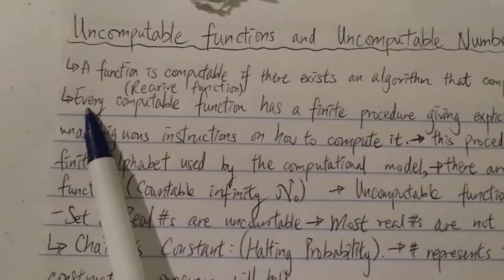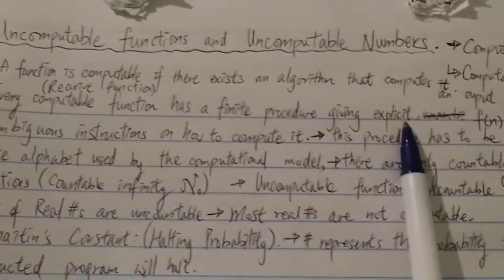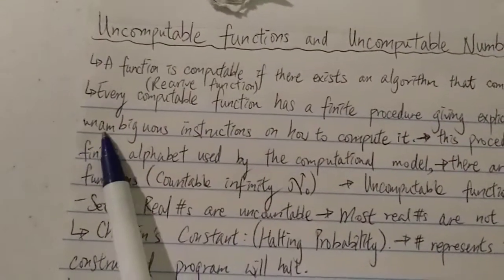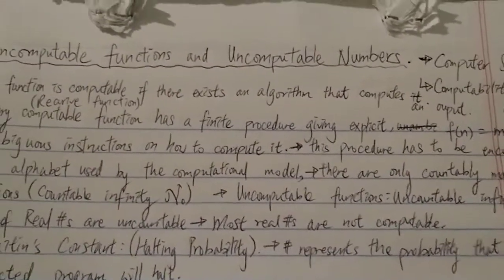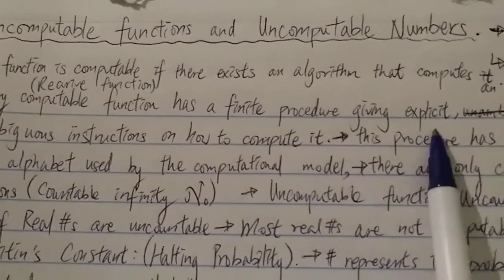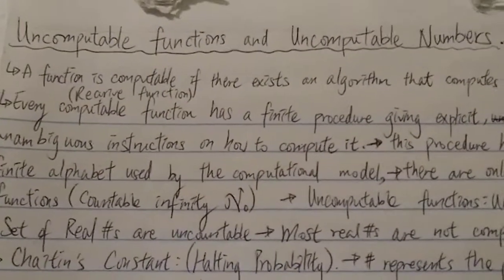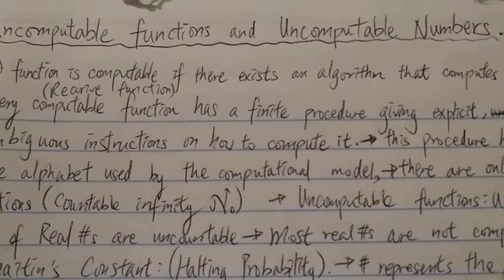In other words, every computable function has a finite procedure giving explicit and unambiguous instructions on how to compute it. The procedure has to be finite and explicit. Otherwise, it's an uncomputable function. You cannot have an infinitely long procedure.